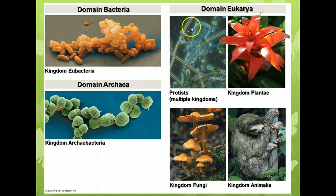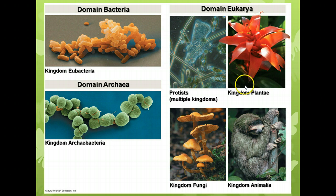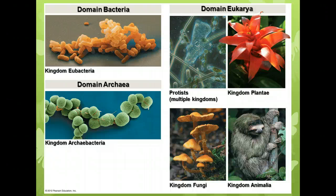Domain eukarya includes the protists — your book says multiple kingdoms, which reflects the very high diversity within the protista. Kingdom plantae — the plants. Kingdom fungi, which includes mushrooms, molds, and yeasts. And kingdom animalia, which includes animals, insects, birds, mammals, and so forth. It's necessary to have a way to categorize these things, and that's why we have taxonomy — the science of classifying and naming things. We'll spend time later this year learning about how that works.